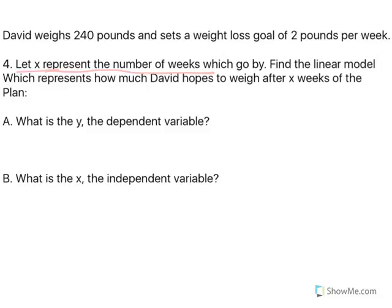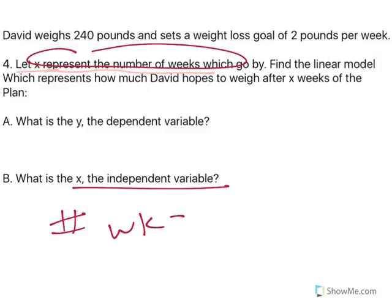And so, it's really important, do it whatever step you want. But what's the independent, what's the dependent variable? Well, they tell us that x is the independent variable, is the number of weeks that David is on this weight loss plan. So, after a bunch of weeks go by, y is going to be his weight. Right? If he's losing 2 pounds a week, after 10 weeks, he has a certain weight. After 12 weeks, he has a certain weight. After 80 weeks, he has a certain weight. So, the dependent variable is his weight. His weight depends on how many weeks have gone by in this weight loss system.